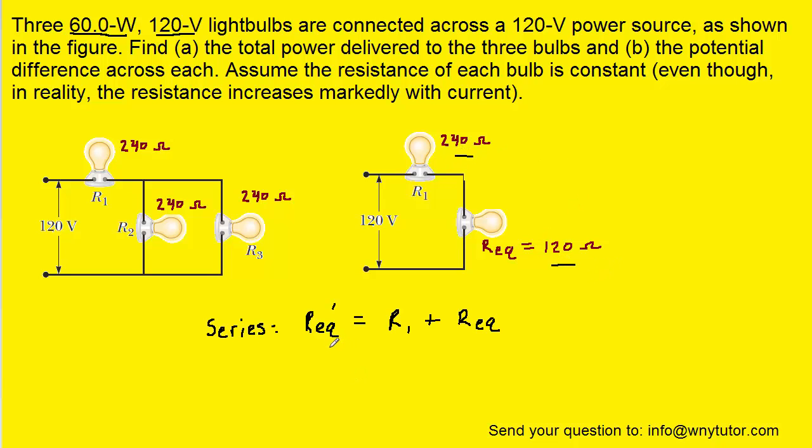Recalling that in series, that is how we obtain the equivalent resistance, just by summing the individual resistances. And when we do that we obtain an overall equivalent resistance of 360 ohms.